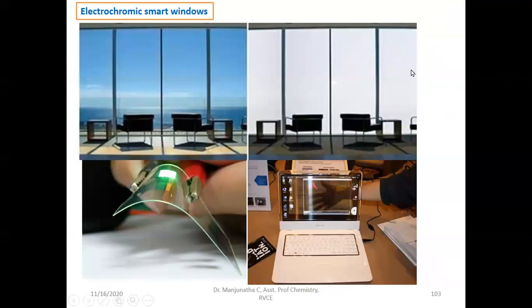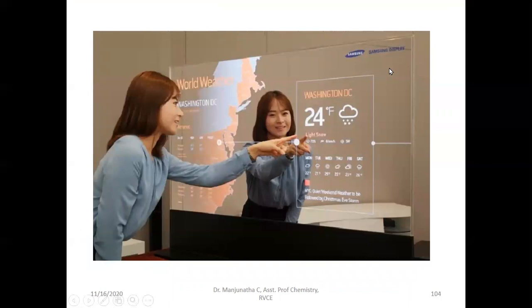This is an electrochromic device — a glass door in offices coated with a functionalized polyaniline model. In the switch-off mode it is transparent and you can see outside. When electricity is supplied, it becomes opaque. Such materials can be developed using polyaniline, and it is also used in flexible LEDs and transparent displays. This is a transparent display developed by Samsung using polyaniline and conducting polymers.